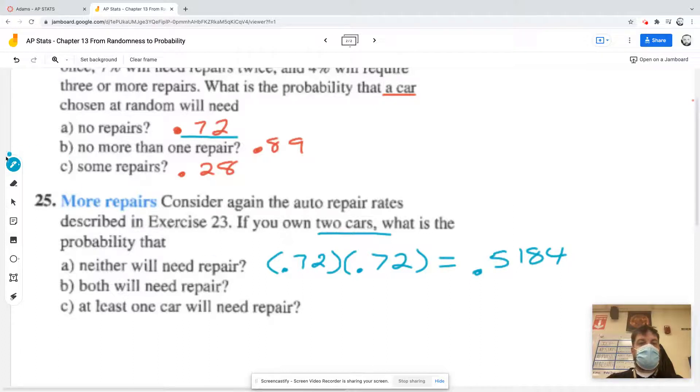All right. So now it says that they'll both need a repair. So that's some repairs, right? Not that they need at least one. It's really some. So in that particular case, I'm just going to say for the first car, I got a 28% chance that it'll need a repair. On the second car, I got a 28% chance. So 0.28 times 0.28. So that is about 0.0784 if I plug that in my calculator.